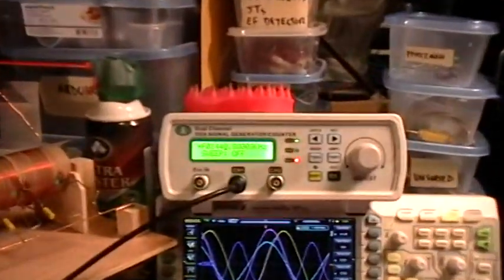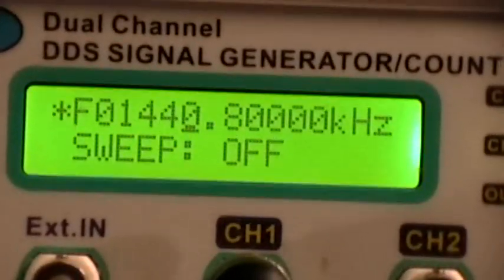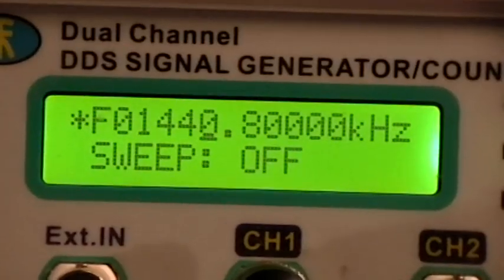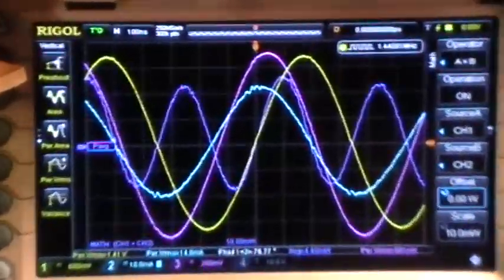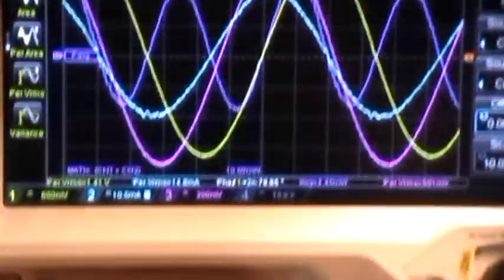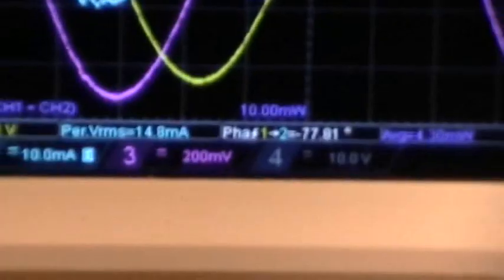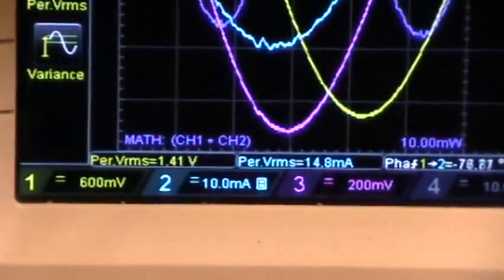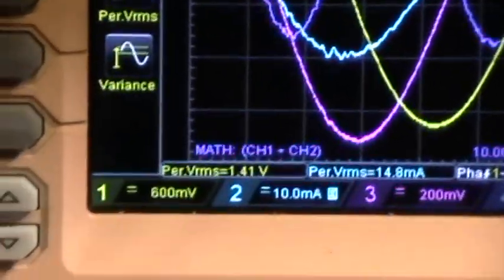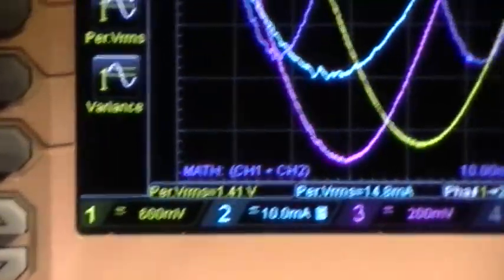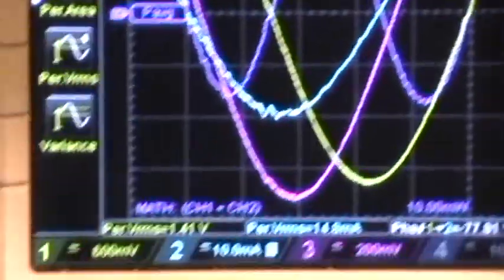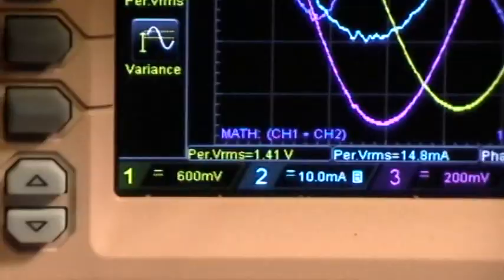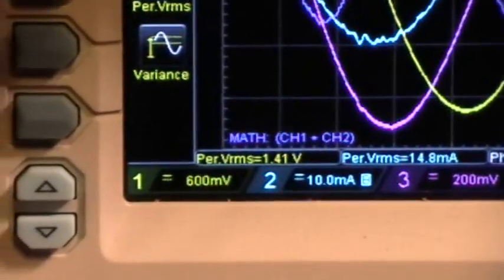Okay, and function generator is producing a sine wave at 1.44 megahertz there. And there's the live scope view, and here, oops sorry about the focus, here are the parameters that we're interested in: the period RMS voltage. That's the period, that's the RMS voltage calculated across one full period of the yellow trace is 1.41 volts RMS, that's the input voltage.